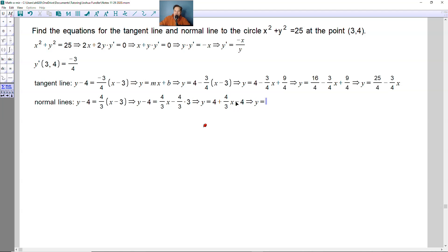Lastly, y would be equal to, the positive 4 and the negative 4 cancel off. Therefore, you will have 4 thirds x, and this is the answer for the equation of the normal line.